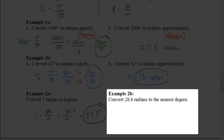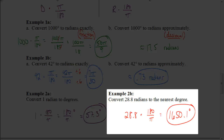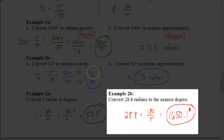Pause the video and try the next conversion on your own. You should get approximately 1,650.1 degrees. It's very important to include your units. When working with degrees, make sure you have the degree symbol. When working with radians, there's no symbol — you write 'radians' or leave it in terms of π, and that represents radians.